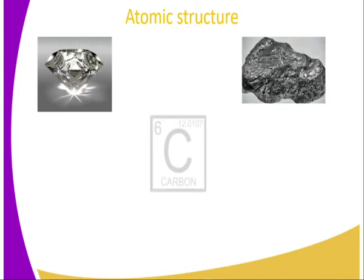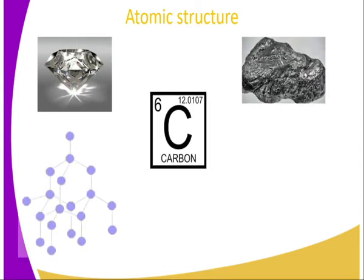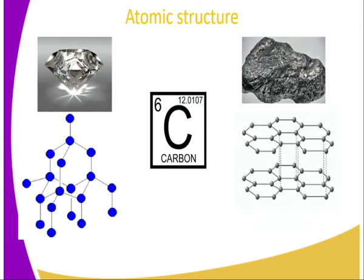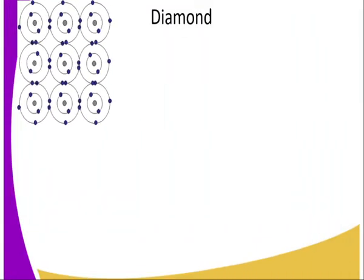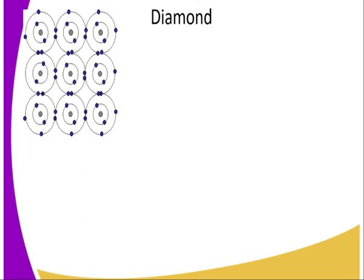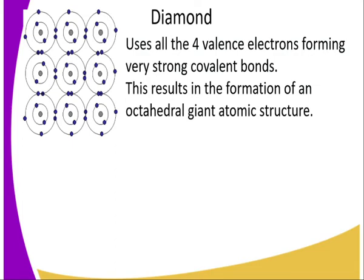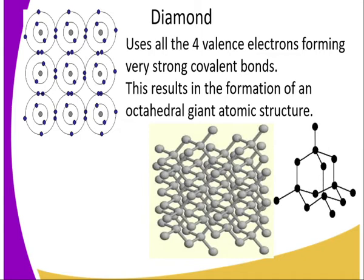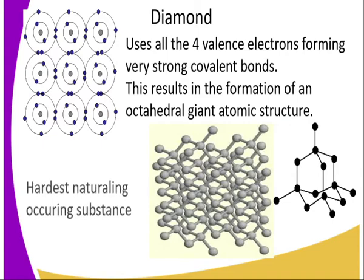Atomic structure — the allotropes of diamond and graphite. Diamond and graphite are allotropes of carbon. In diamond, carbon uses all four valence electrons, forming very strong covalent bonds. This results in the formation of an octahedral giant atomic structure. For that reason, diamond does not have any delocalized electrons.